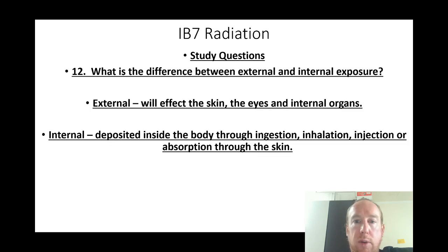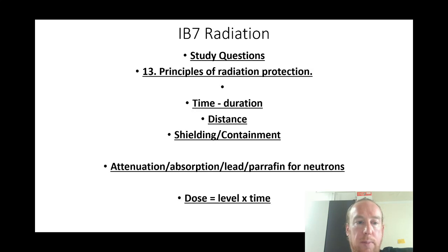What is the difference between external and internal radiation exposure? External will affect the skin, eyes, and internal organs. Internal — deposited inside the body through ingestion, inhalation, injection, or absorption through the skin. Principles of radiation protection: time (duration), distance, shielding, and contamination control.